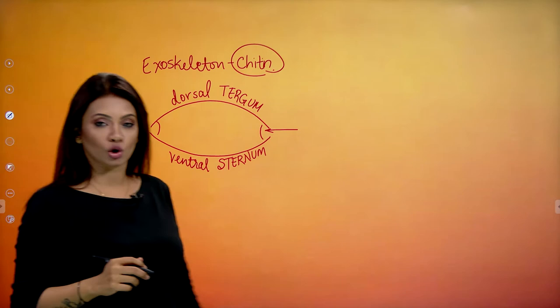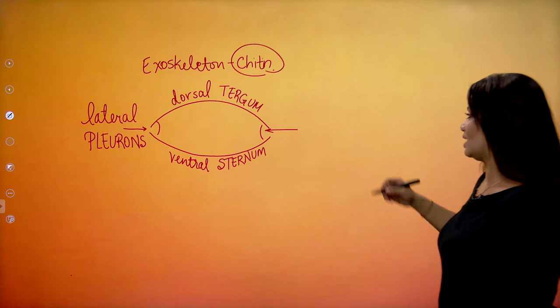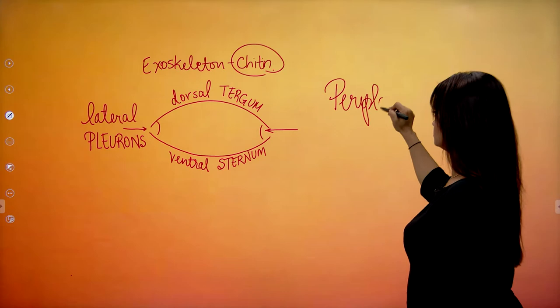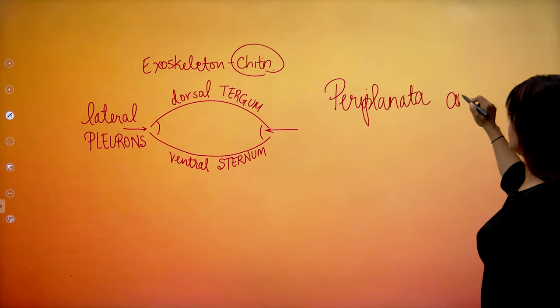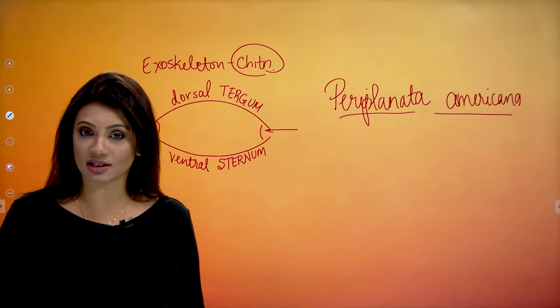The scientific name of the cockroach we are studying — one of the most common cockroaches seen in India — is Periplaneta americana. Remember the names of the exoskeleton and the scientific name of the cockroach we are studying.